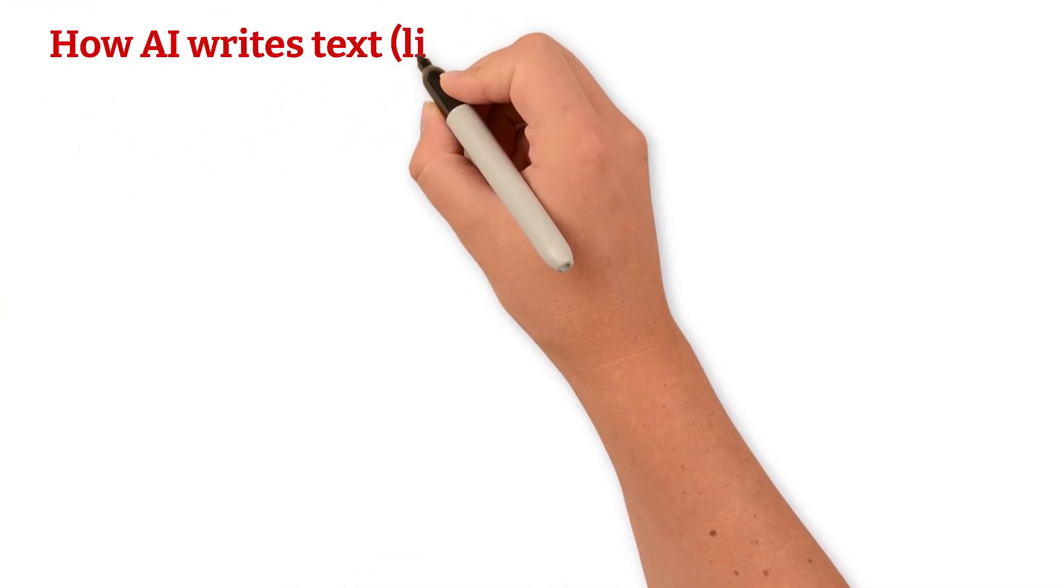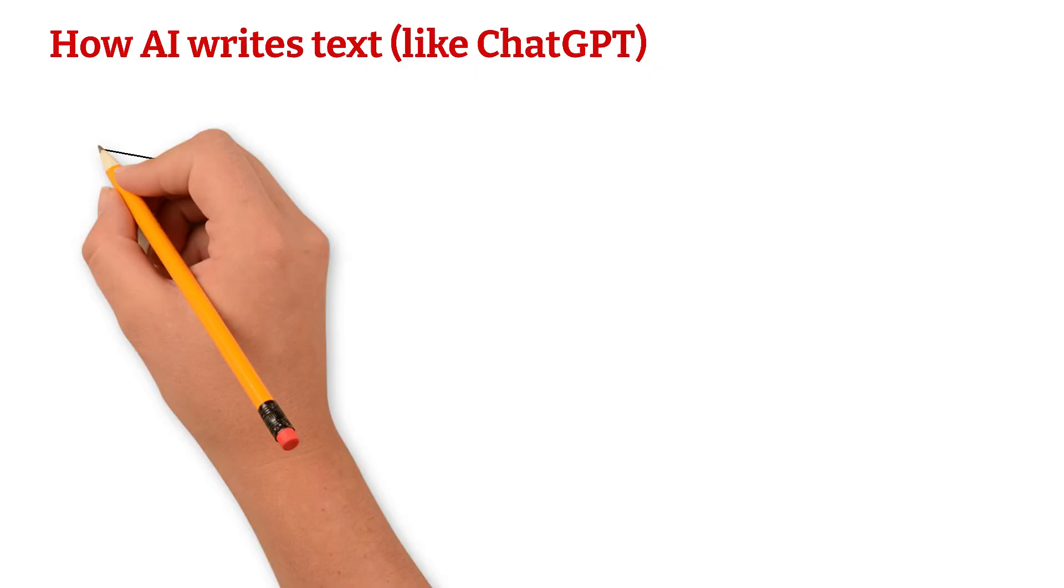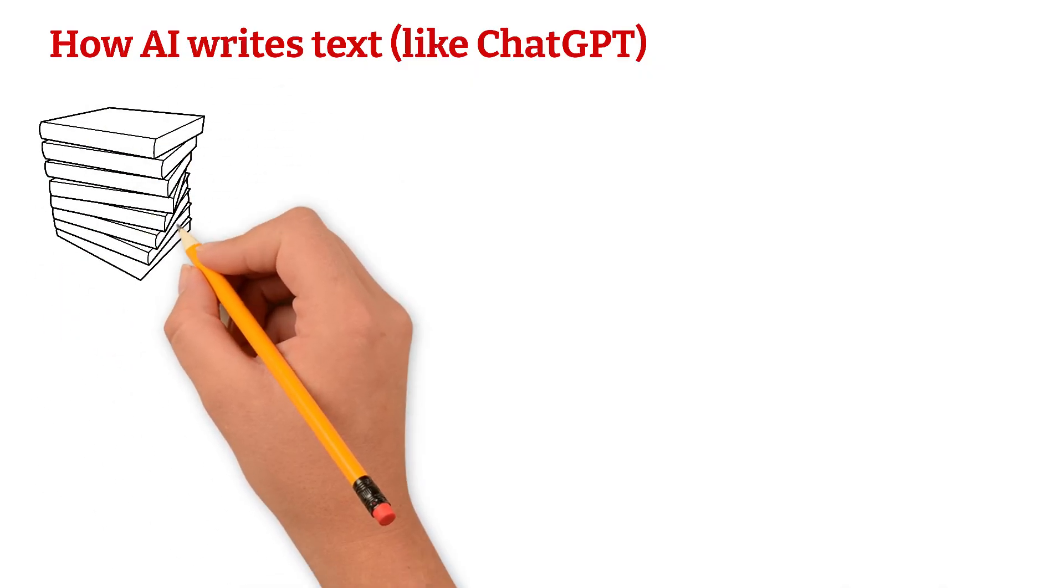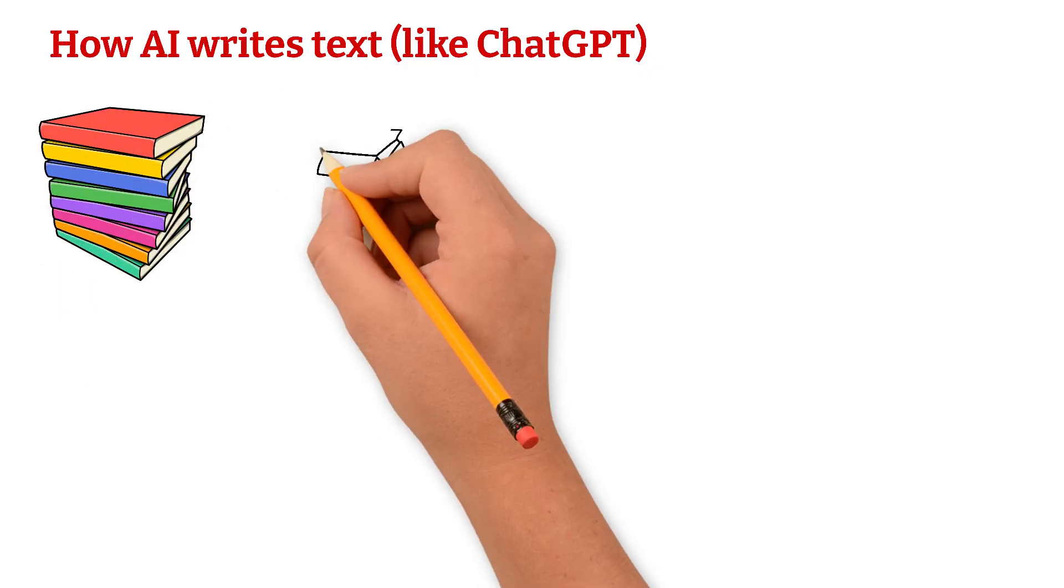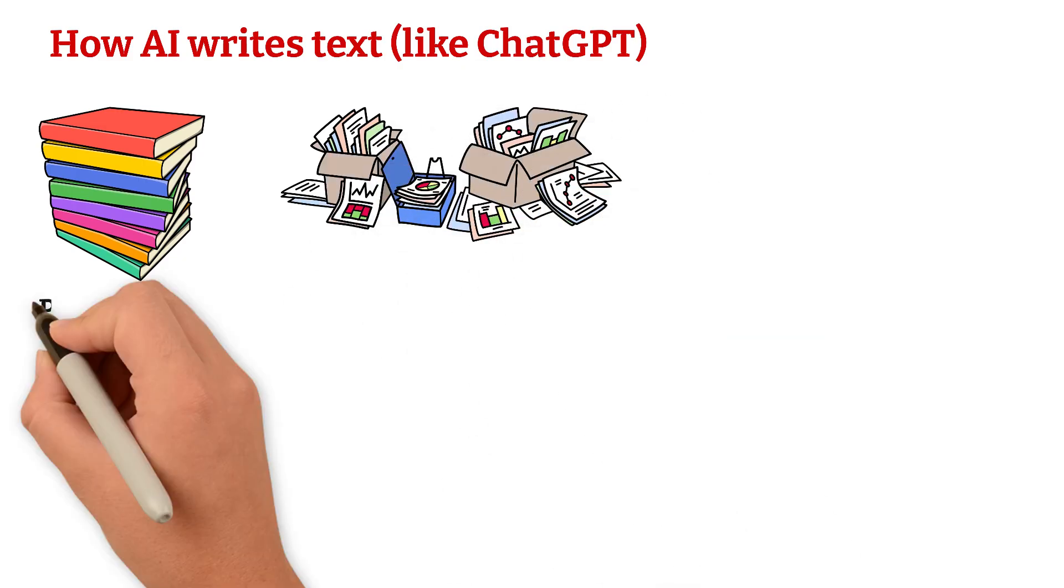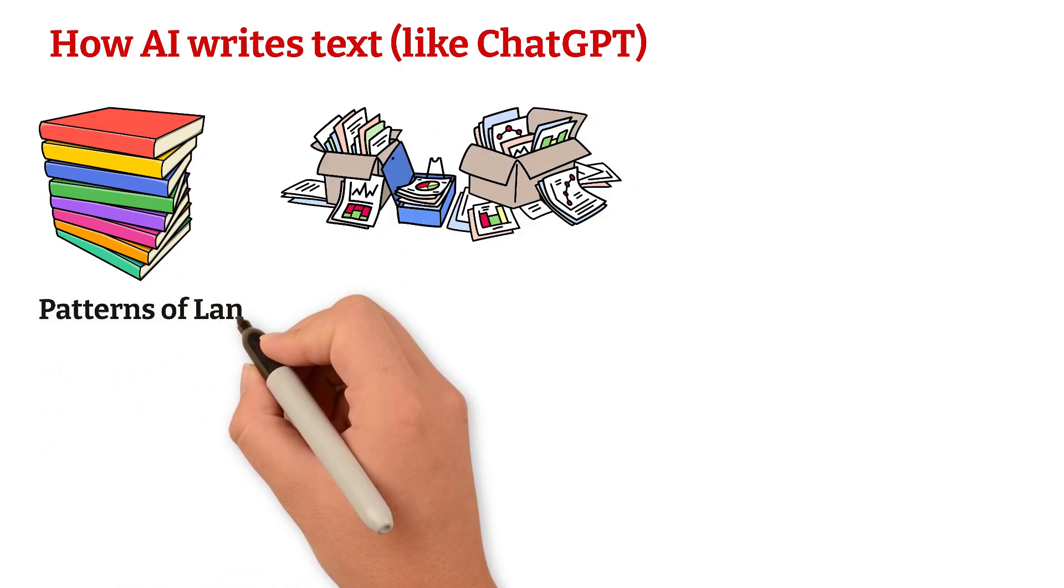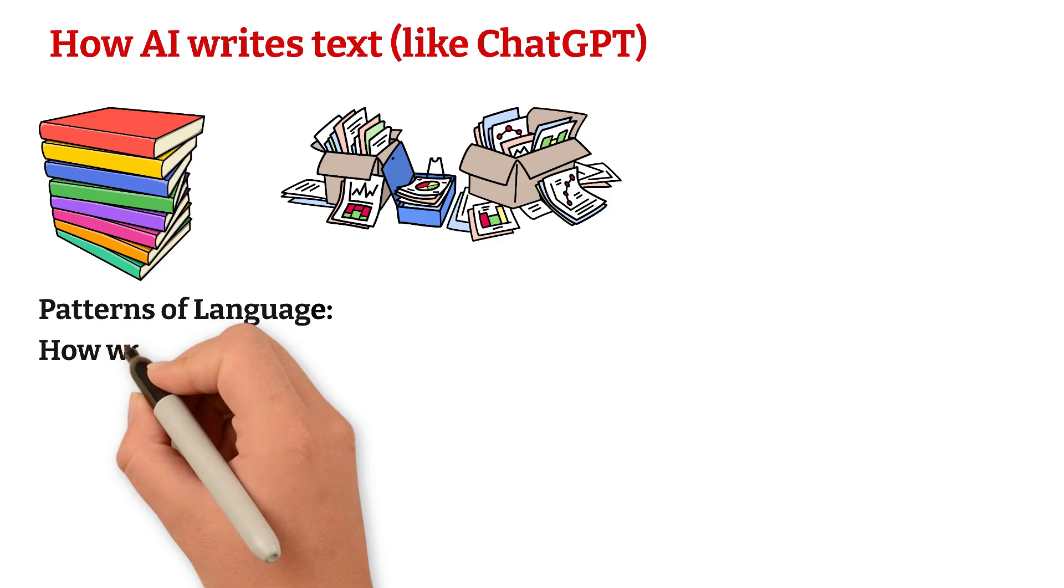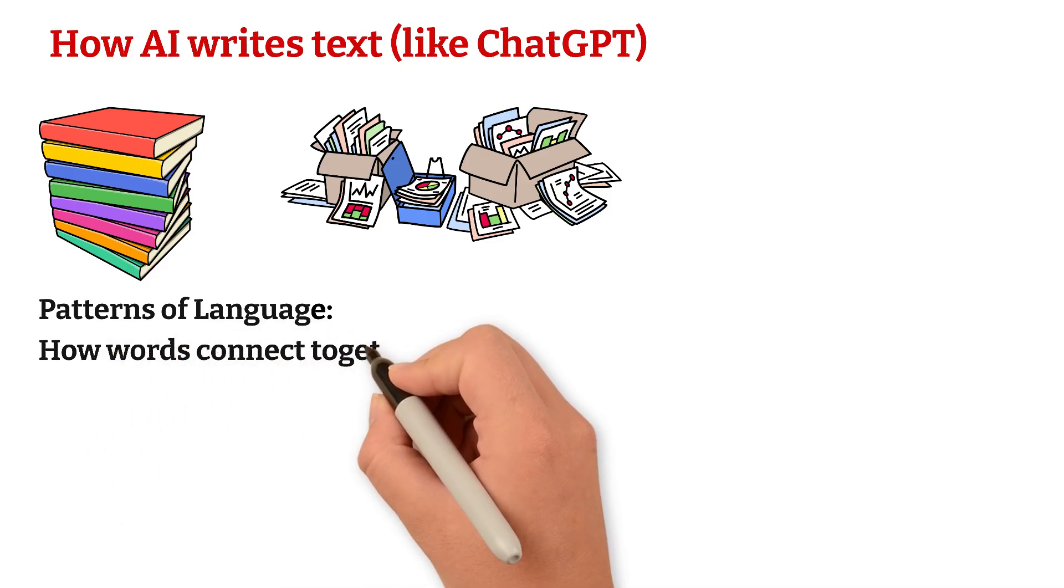How AI writes text, like ChatGPT. ChatGPT was trained on billions of words from books, websites, and articles. It doesn't memorize everything. Instead, it learned the patterns of language, how sentences are formed, and how words connect together.